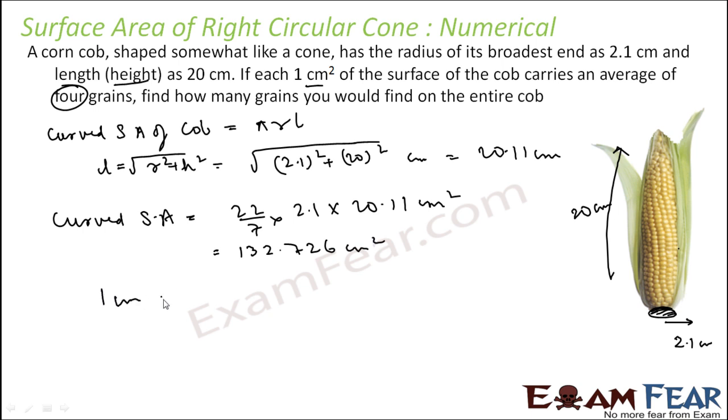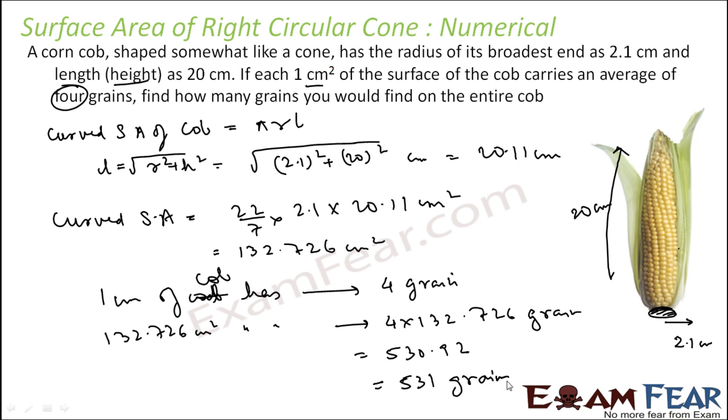So 1 cm square of cob has 4 grains. So 132.726 cm square cob will have how many? 4 into 132.726 grains. So if you solve this you get 530.92 and that is almost 531 grains. So that is the number of grains this particular corn cob will have. It is pretty easy.